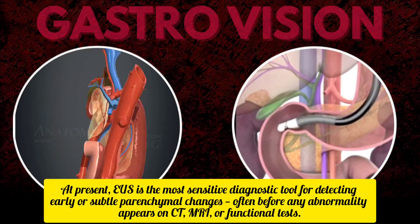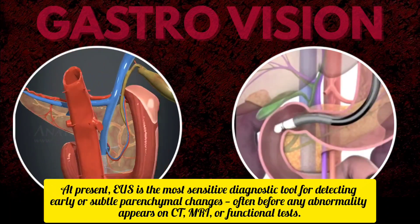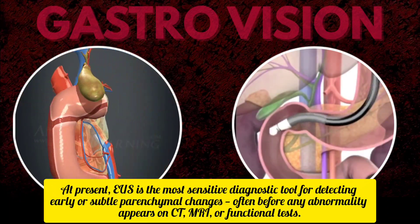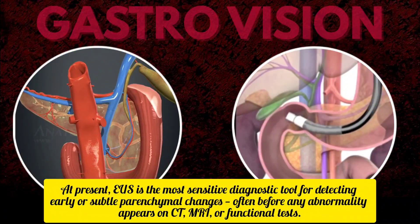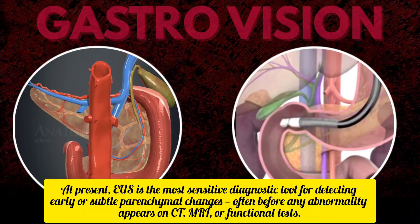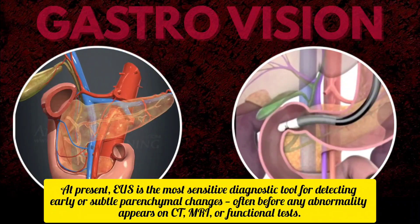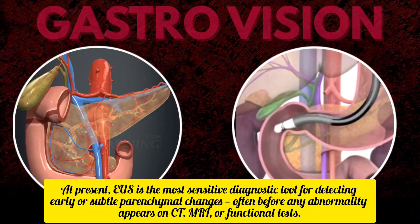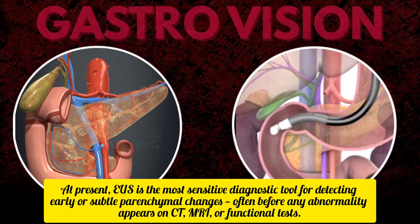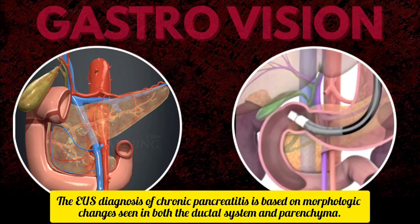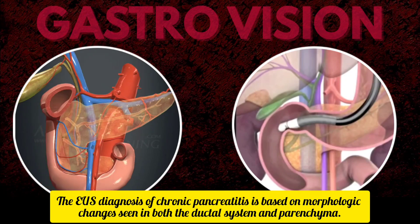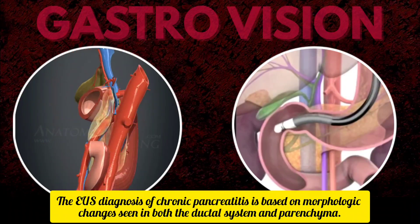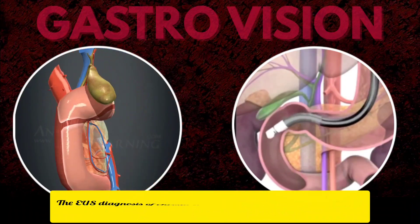At present, EUS is the most sensitive diagnostic tool for detecting early or subtle parenchymal changes, often before any abnormality appears on CT, MRI, or functional tests. The EUS diagnosis of chronic pancreatitis is based on morphologic changes seen in both the ductal system and parenchyma.